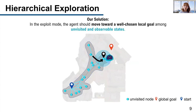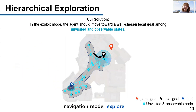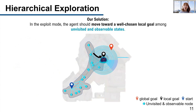Therefore, our solution is to make the agent move to the frontier of the map instead of backtracking. Specifically, we choose a local goal from previously unvisited but observable states. By applying our idea after the agent makes the wrong action, it moves to one of the blue nodes, which illustrate the unvisited and observable nodes. Additionally, if you choose a proper local goal by making use of the constructed map, the agent can get a chance to get closer to the global goal even during exploitation.